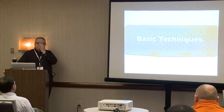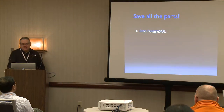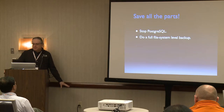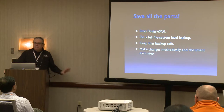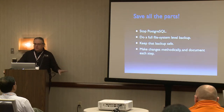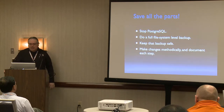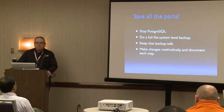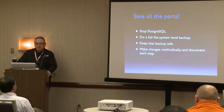Basic corruption recovery techniques. First: save all the parts. Stop PostgreSQL and do a full file system level backup — keep that backup safe. Take a snapshot of it because you're going to start modifying things, but you want a zero point to start with. Make changes methodically and document every step. Use a wiki, use Slack, use a paper notebook — just use something. Don't just keep making changes because halfway through you'll ask 'what did I do again?' and that could be very bad.